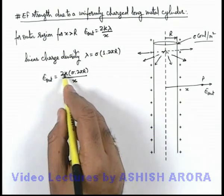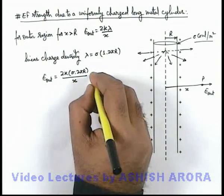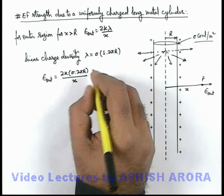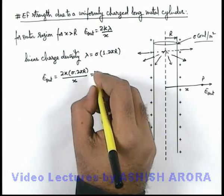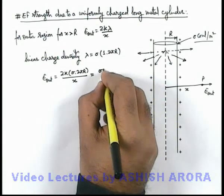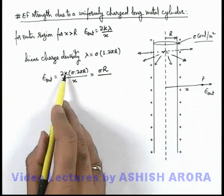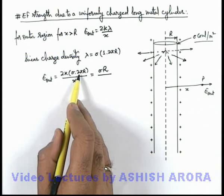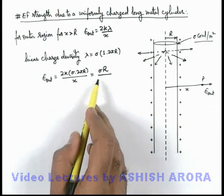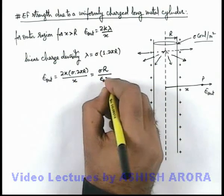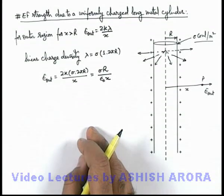And here if we substitute the value of k as 1 by 4 pi epsilon not the result will be, in this situation if k is 1 by 4 pi epsilon not 4 pi gets cancelled out. Will be sigma R by epsilon not x. This will be the result which will be there.